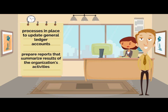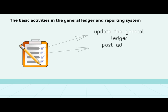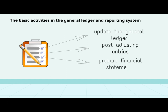The basic activities in the General Ledger and Reporting System are: 1. Update the General Ledger, 2. Post adjusting entries, 3. Prepare financial statements, 4. Produce managerial reports.